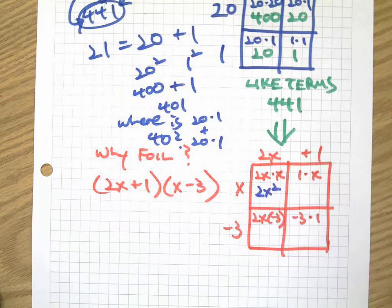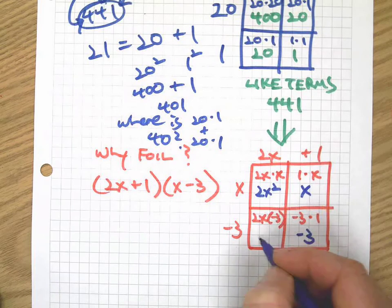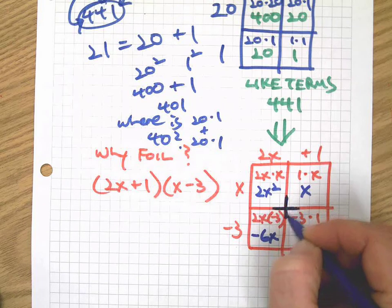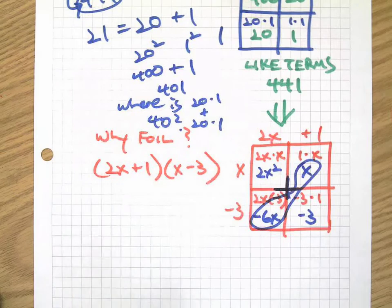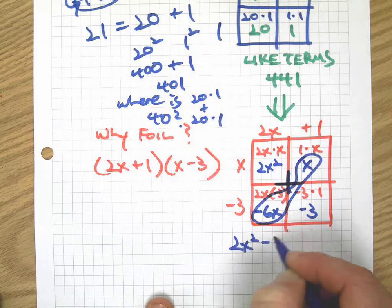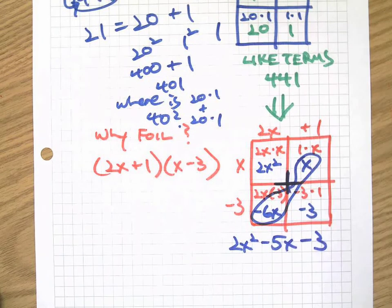But here we have 2x squared, here we have negative 3x and negative 6x, and picture that plus sign in the middle there. We're going to add those things together. Everything's in the right order automatically. We've got 2x squared minus 5x minus 3, that's our answer to that one.